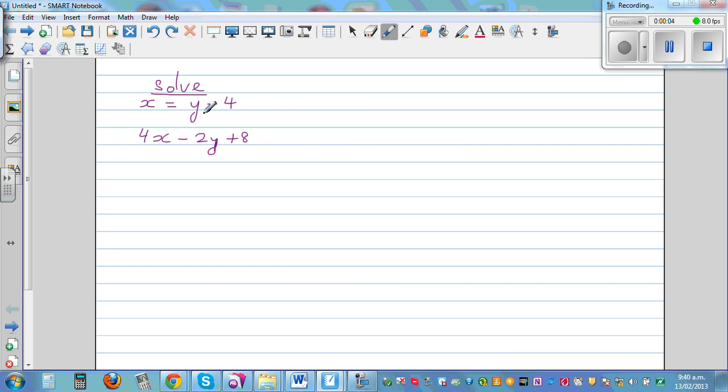Solve x is equal to y minus 4 and the second equation is 4x minus 2y plus 8 is equal to 0. So we want to solve this by a method called substitution.